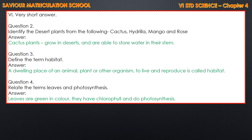Question 3: Define the term habitat. A dwelling place of an animal, plant or other organism to live and reproduce is called habitat. Question 4: Relate the terms leaves and photosynthesis. Leaves are green in color. They have chlorophyll and carry out photosynthesis.